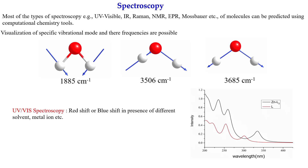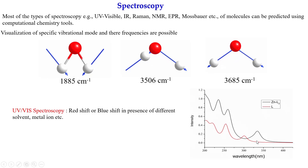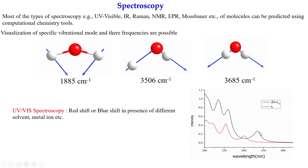You can also calculate UV-visible spectroscopy — for example, explaining the red shift or blue shift in the presence of different solvents, metal ions, etc. In this figure, you can see that this ligand alone has a UV-visible absorption, but when it binds with the metal zinc, we get a red shift — the peak moves from 300 to 350 nm. The geometry and symmetry of excited states can also be predicted using computational chemistry methods.